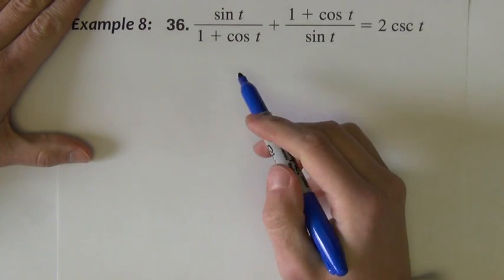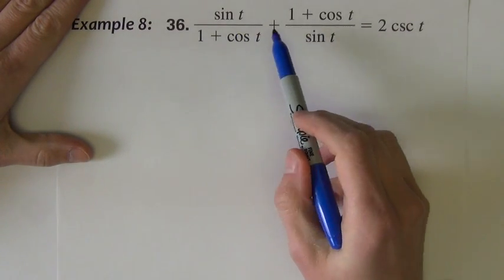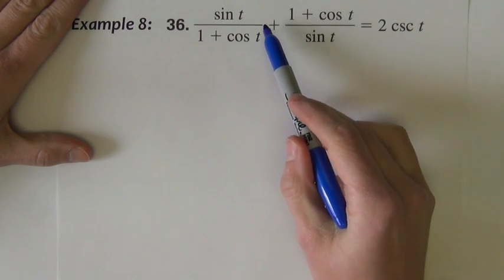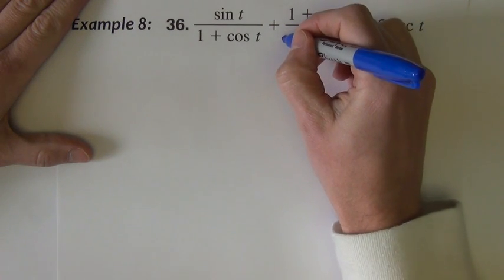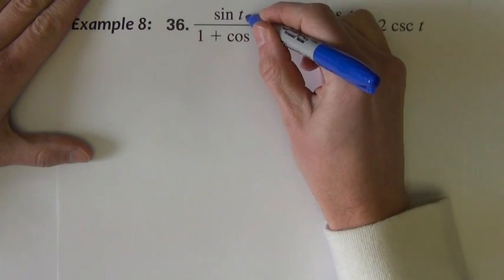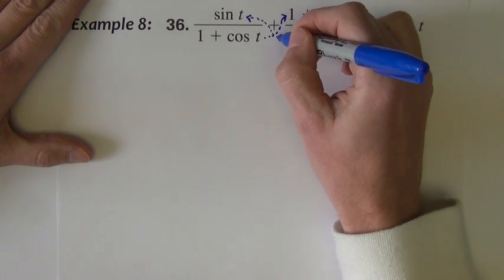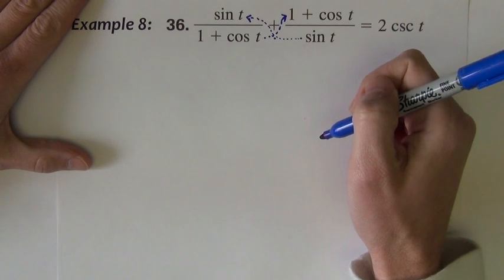In this next example, we see another opportunity where we can combine two fractions by adding them with a common denominator. So let's just begin right there. The way I do it is this denominator comes across and multiplies, this one multiplies, and then they're going to multiply together as well to make the common denominator.